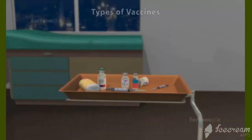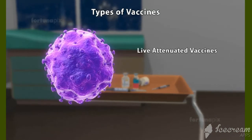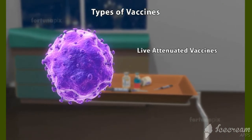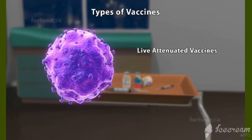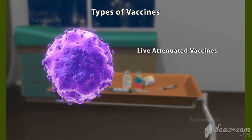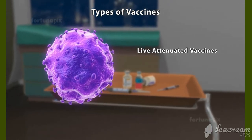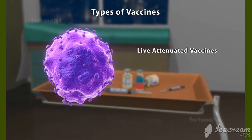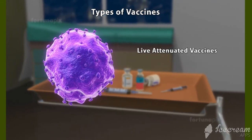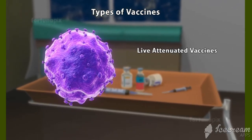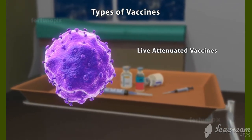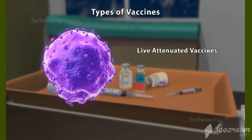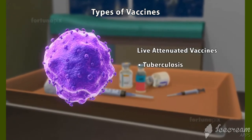Types of vaccines — Live attenuated vaccines: These vaccines contain a virus or bacteria which is weakened in a laboratory to the point where it is still alive and able to reproduce, but cannot cause serious illness. Examples of live attenuated vaccines include those against tuberculosis, rabies, and smallpox.